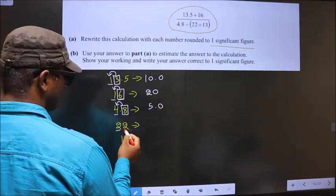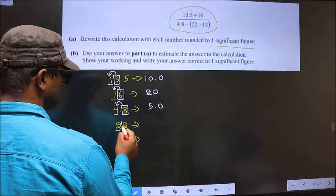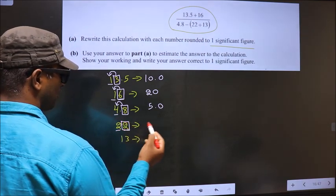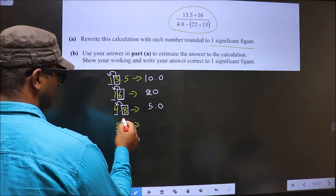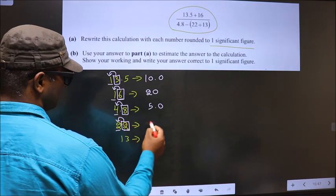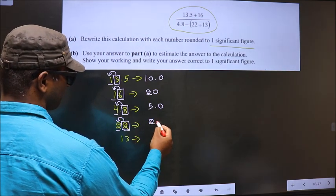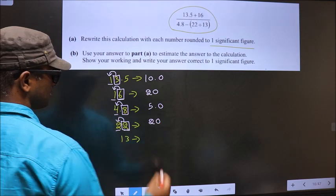Now, first significant and second significant number is 2. 2 smaller than 5. So we don't need to add any number to this. It will remain 2. And in the rest of the place, you put 0.